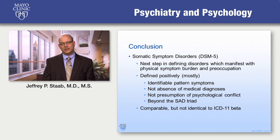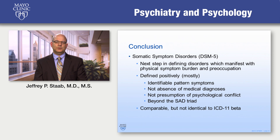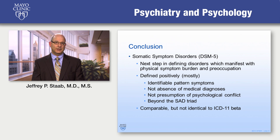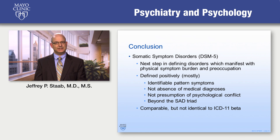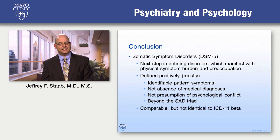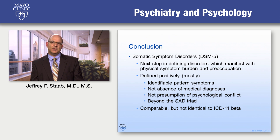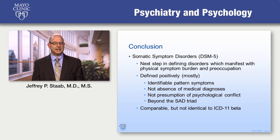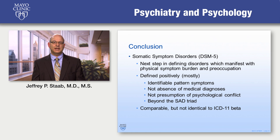In conclusion, the move to somatic symptom disorders is really the next step in defining these disorders that manifest primarily with physical symptoms and burden and preoccupation associated with them. The goal is to define them positively — and that's mostly been accomplished — not negatively by what they're not. We're looking, as we do in other disorders, for an identifiable pattern of symptoms, not specifically the absence of medical comorbidity, and we don't necessarily have to identify a psychological conflict presumed connected to these disorders. This is the next step beyond the successes of the SAD triad in the 20th century, with comparable but not entirely identical changes occurring in the ICD-11. Thank you all very much.